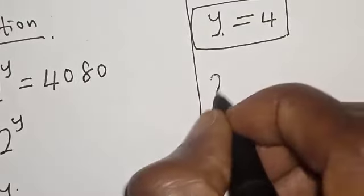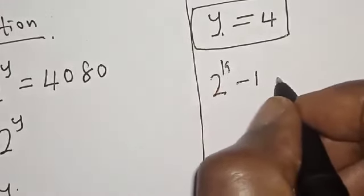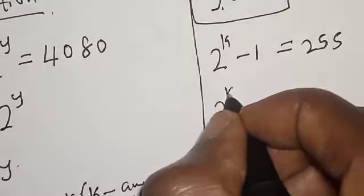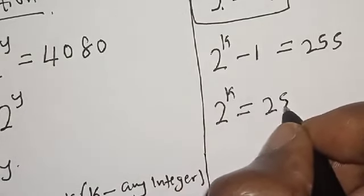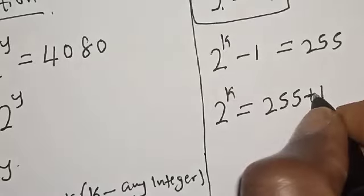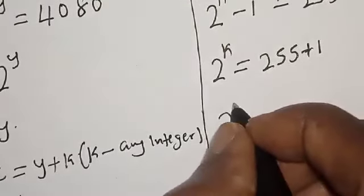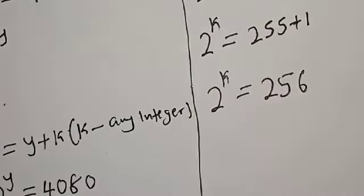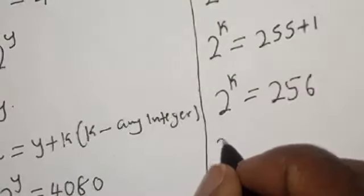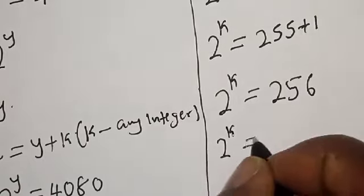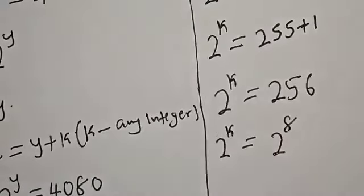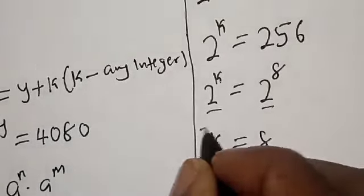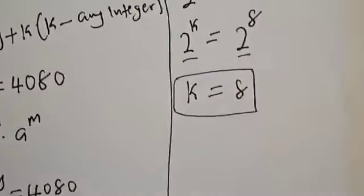From equation 2: 2 raised to power k minus 1 equals 255. So 2 raised to power k equals 255 plus 1, which is 256. Since 256 equals 2 raised to power 8, and they have the same base, k is equal to 8. That is the value of k.